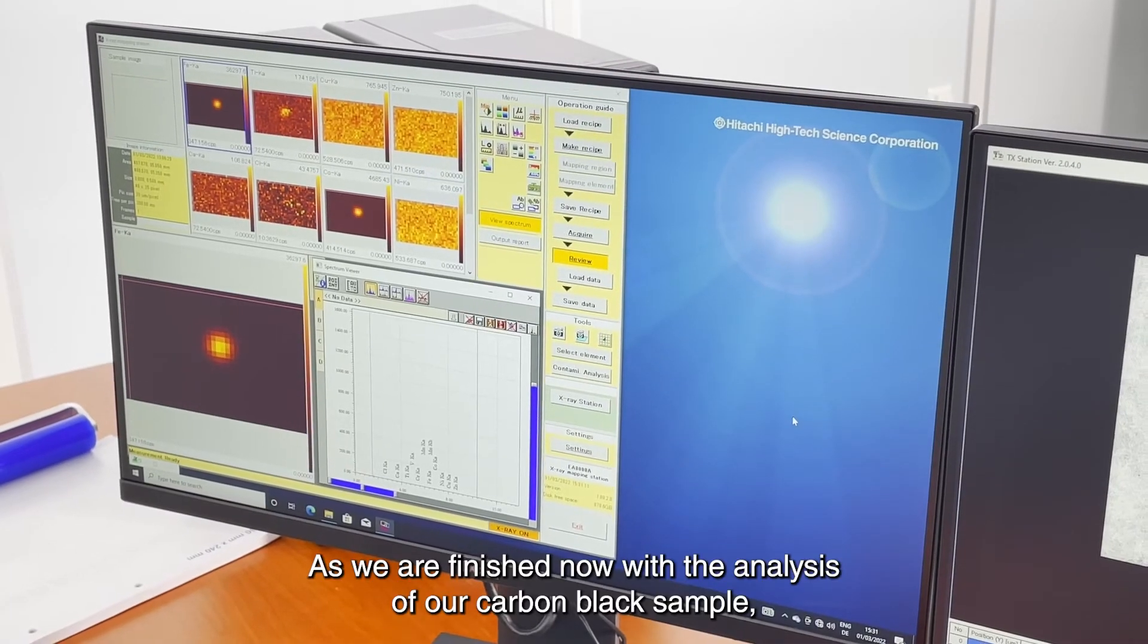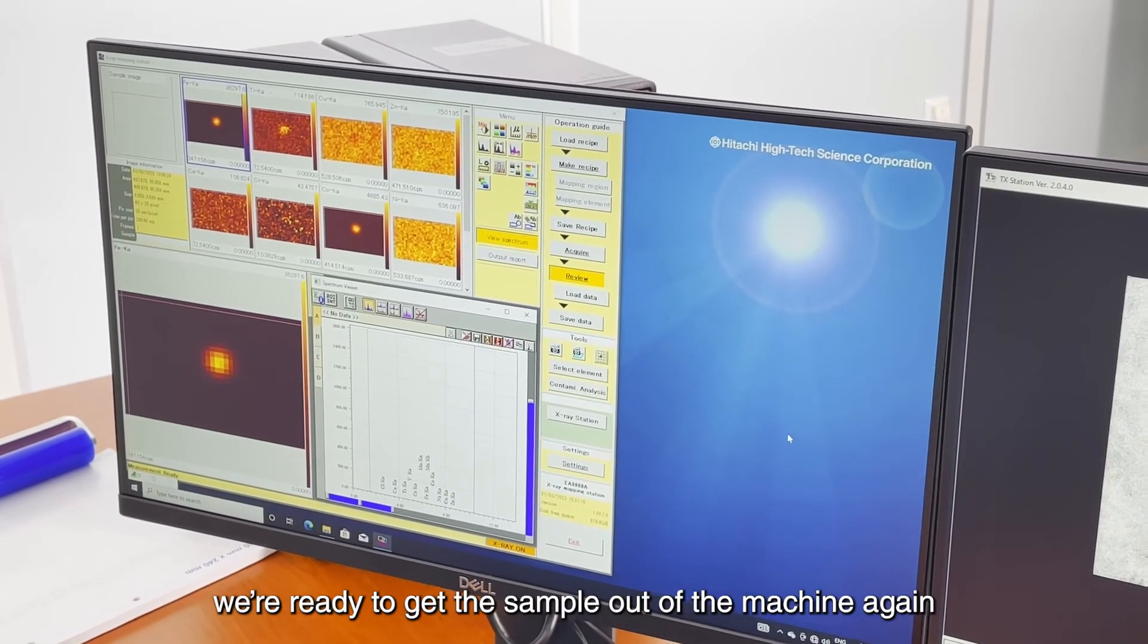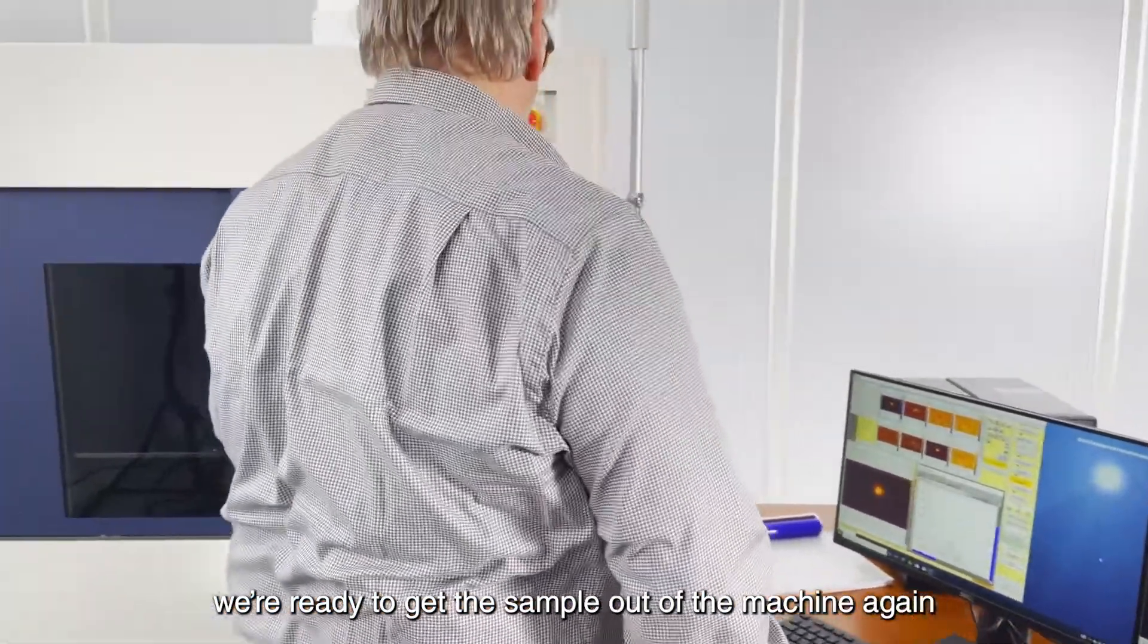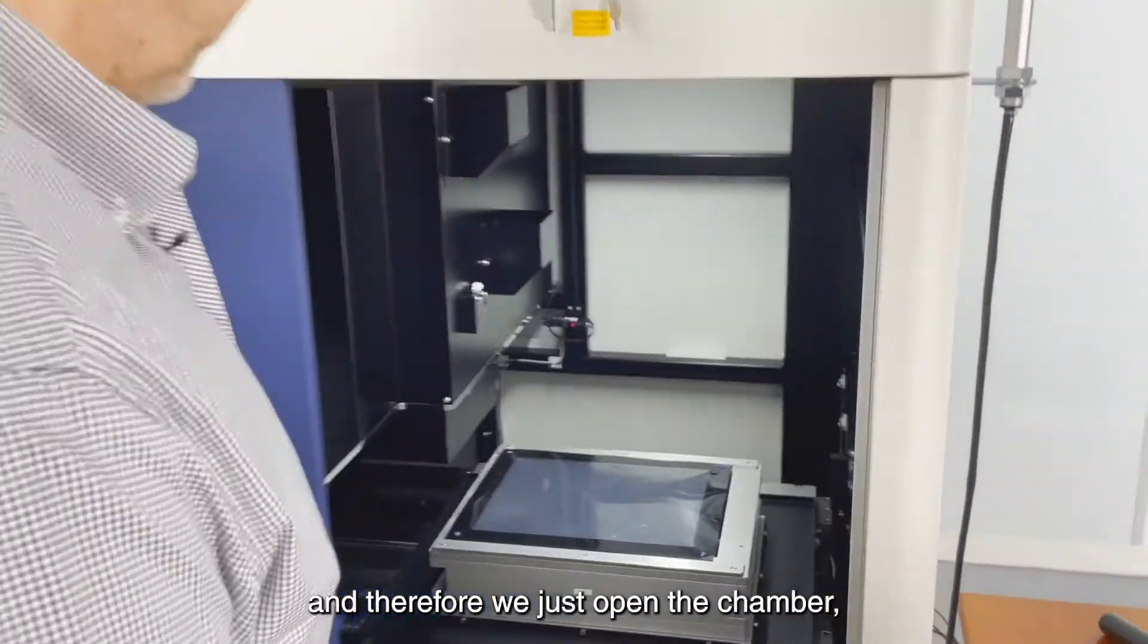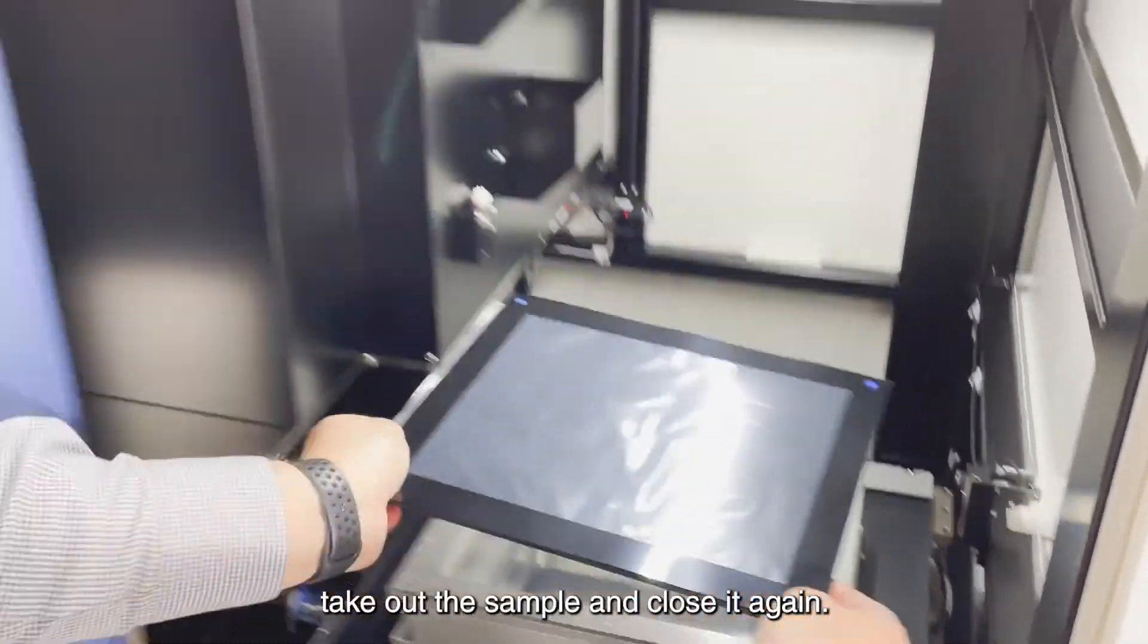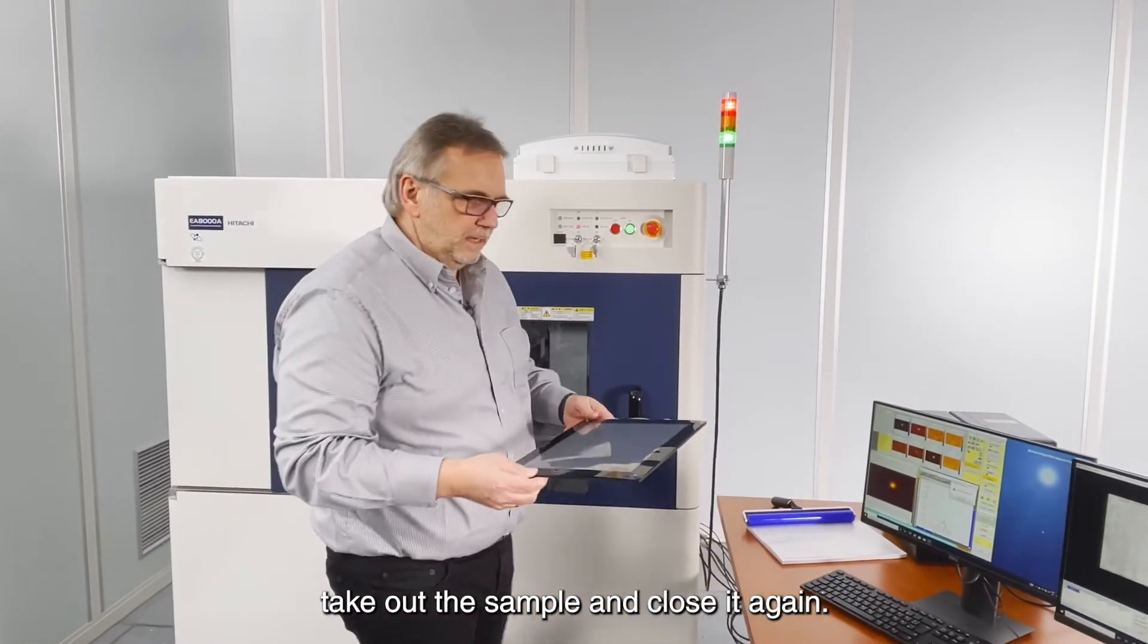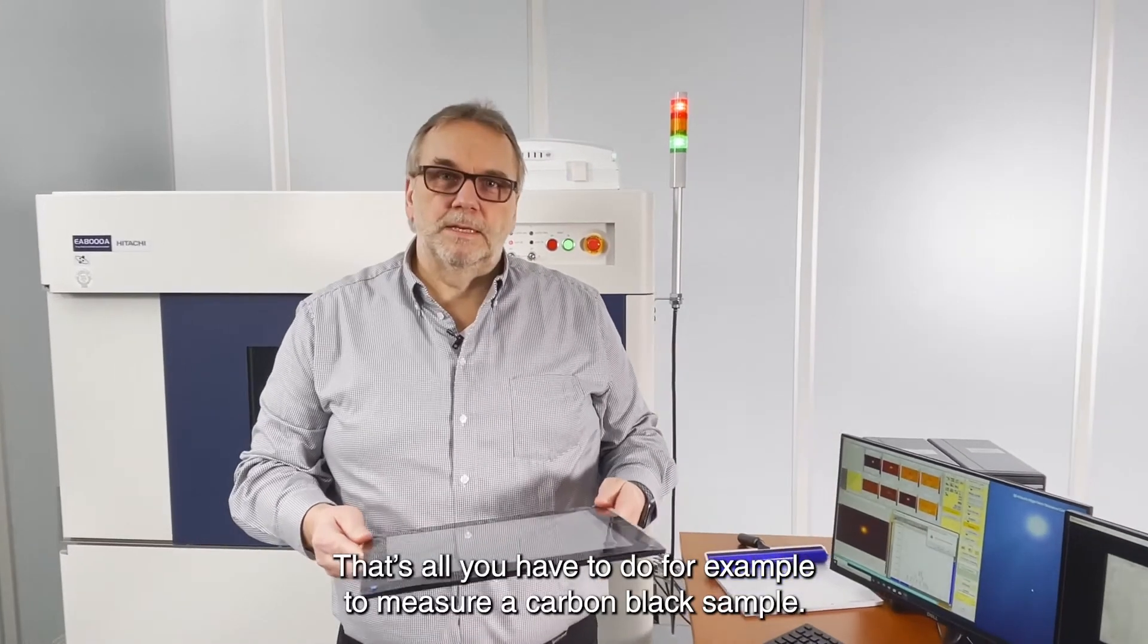As we are finished now with the analysis of our carbon black sample we are ready to get the sample out of the machine again. Therefore we just open the chamber, take out the sample and close it again. That's all what you have to do for example to measure a carbon black sample.